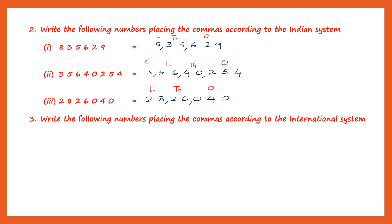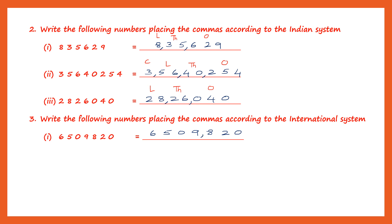Next one: write the following numbers placing the commas according to the international system. So we have the first one: six, five, zero, nine, eight, two, zero. International system — ones, tens, hundreds is one period; thousands, ten thousands, hundred thousands is the next period; and then we have million. After each period we put a comma. So: ones, tens, hundreds — comma; thousands, ten thousands, hundred thousands — comma. This is the ones period, this is the thousands period, and this is the millions period. So if you read: six million, five hundred and nine thousand, eight hundred and twenty.